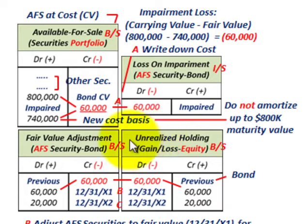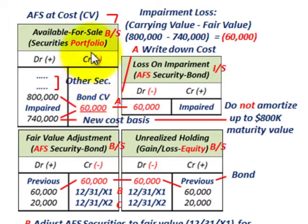That concludes our discussion of impairment of debt securities classified as available-for-sale securities. Thank you.